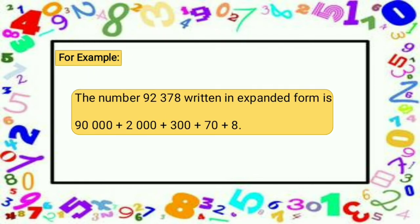For example, the number 92,378 written in expanded form: the digit 9 is in the ten-thousands place, so the value of 9 is 90,000. And then the next digit is 2, which is located in the thousands place, so the value of digit 2 is 2,000.